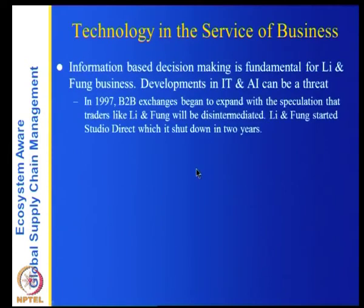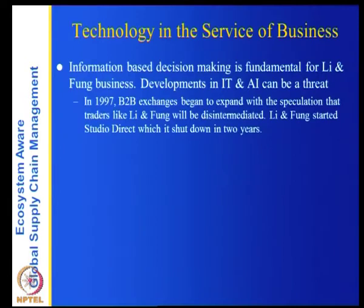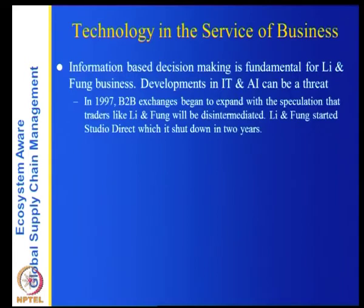On technologies: information-based and data-based decision making is fundamental for Li and Fung's business. AI and technology can be a threat — companies can easily be commoditized, and disruptive technologies like big data are important. Li and Fung employees need access to machine learning and big data techniques; otherwise, if another company masters these technologies earlier, it becomes a competitive threat. In 1997, during the first IT revolution, B2B exchanges began to expand with speculation that traders like Li and Fung would be disintermediated.